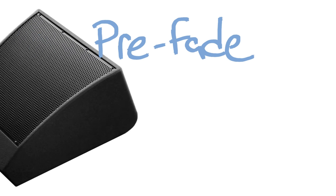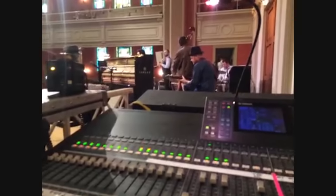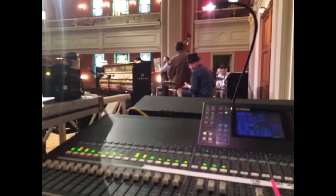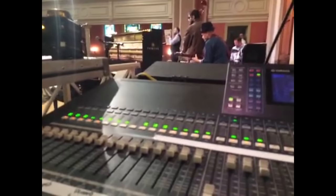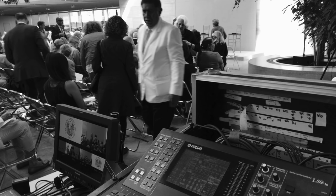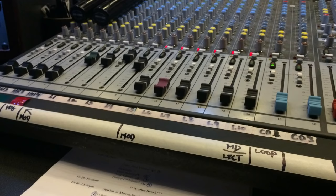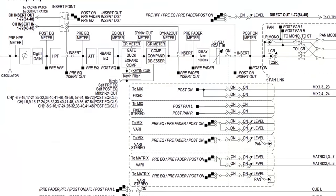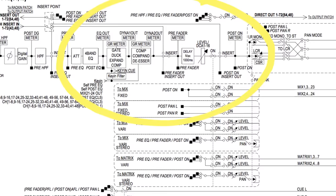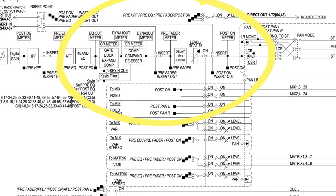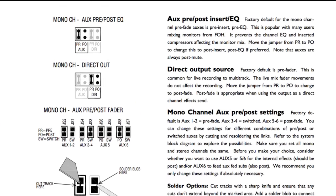A typical example of where you'd want to use a pre-fade send would be for a musician's monitor wedge. You want the monitor mix to remain consistent on stage for the musician regardless of how much or how little of each source you may need in the main PA mix. In contrast, if you were doing a monitor mix for a theatrical play, you may want to use a post-fade send so that the actor's microphone is only live in the monitor mix when they enter the stage and you bring up their corresponding channel fader into the main mix. Going beyond pre or post-fade will be the pick-off point of the signal within the channel's signal chain.